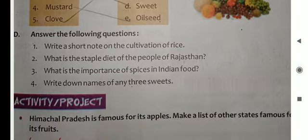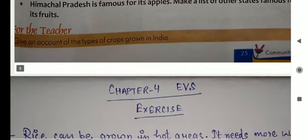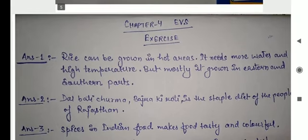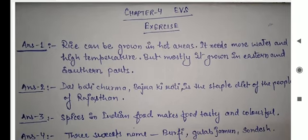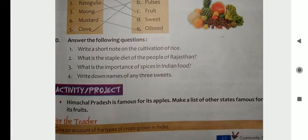Answer the following questions. Question one: Write a short note on the cultivation of rice. Answer: Rice can be grown in hot areas. It needs more water and high temperature. It is mostly grown in the eastern and southern parts of India.